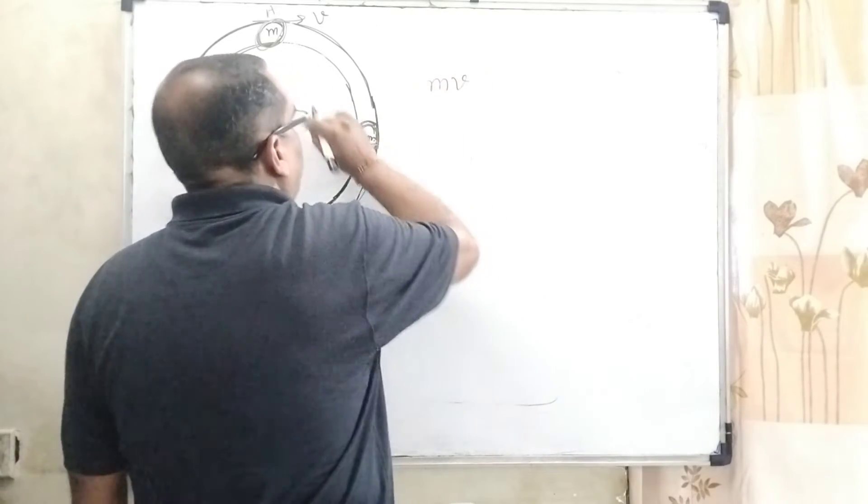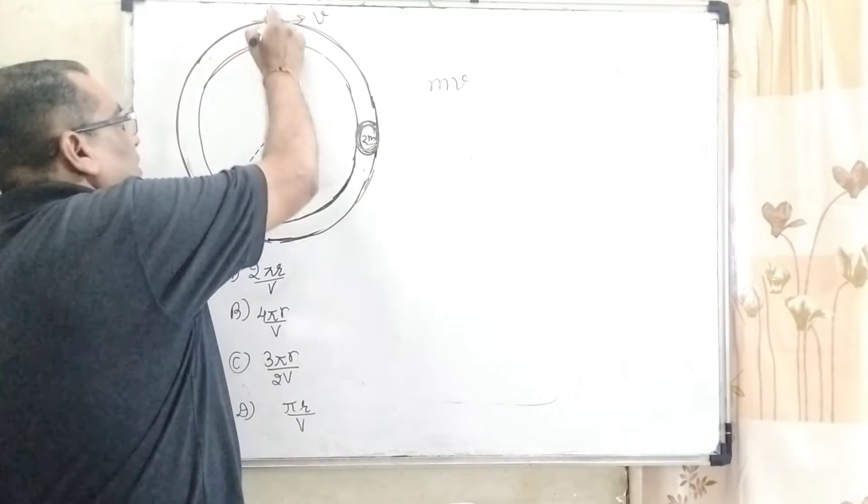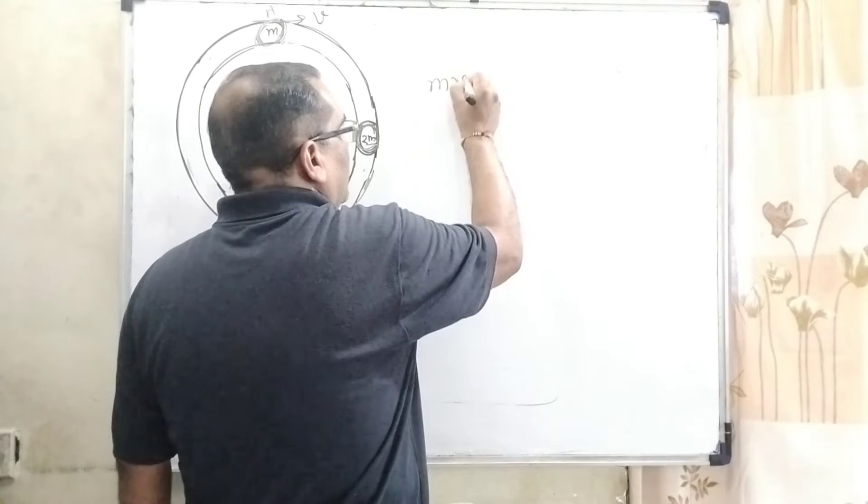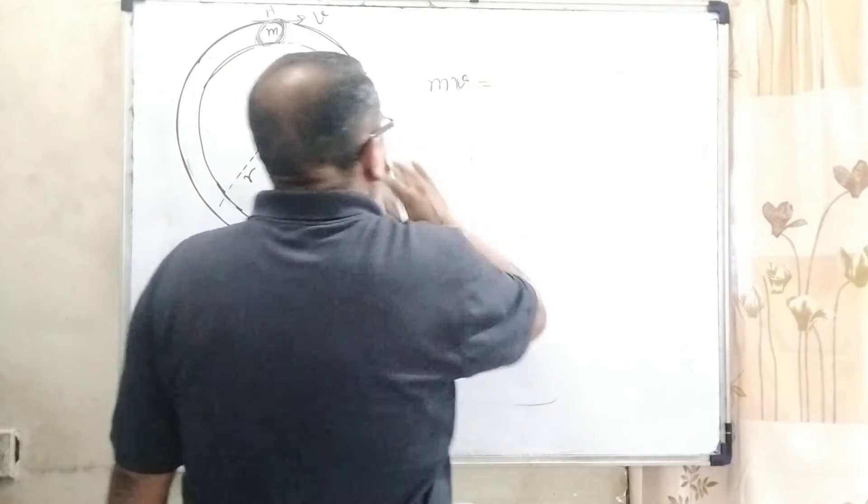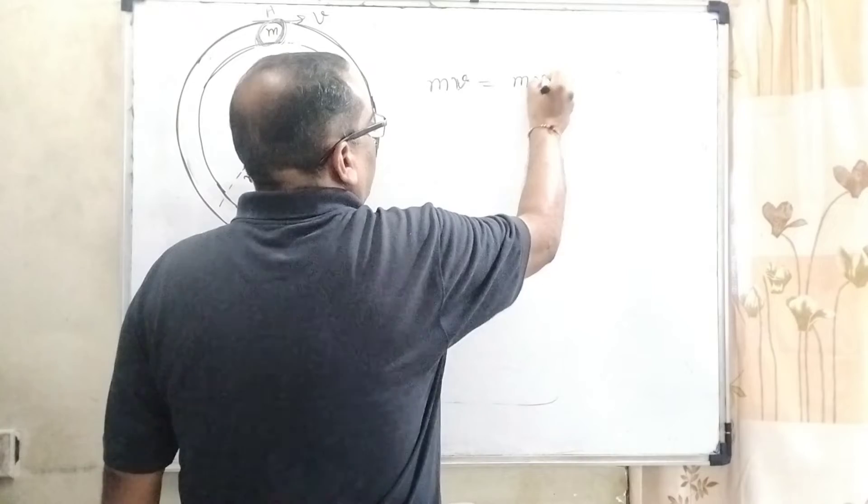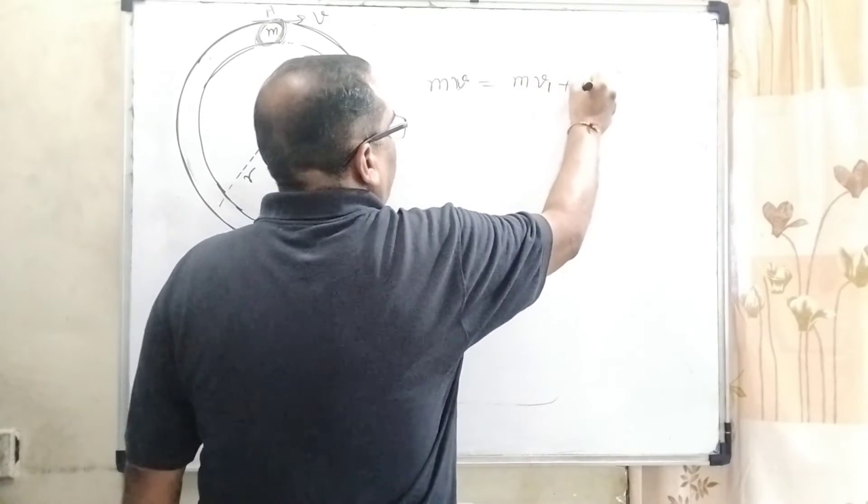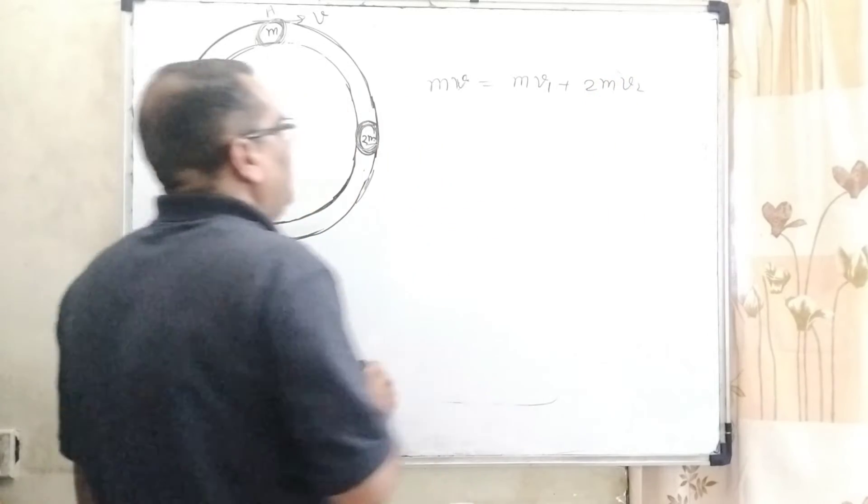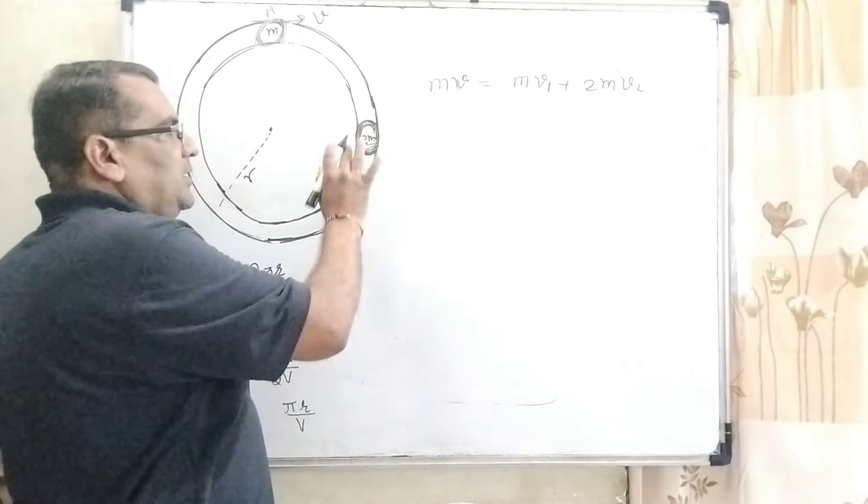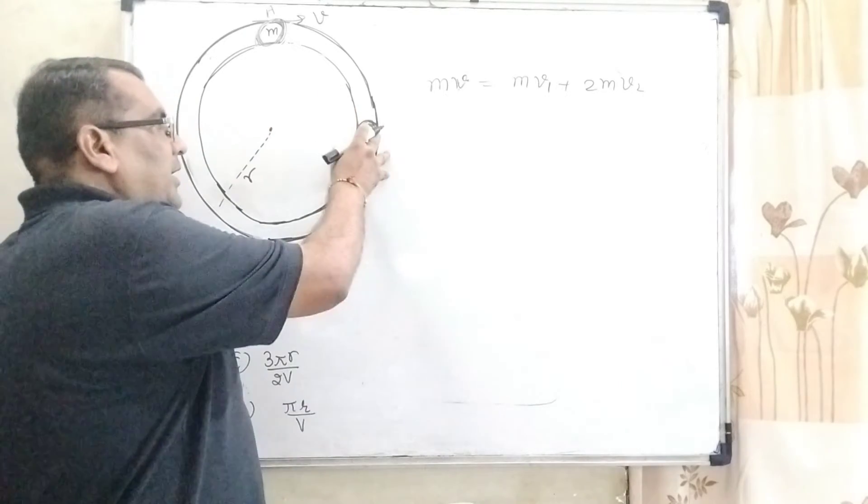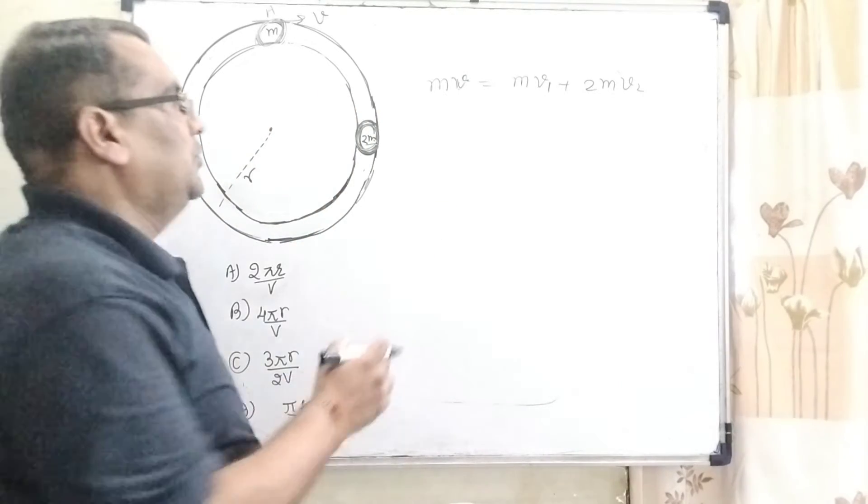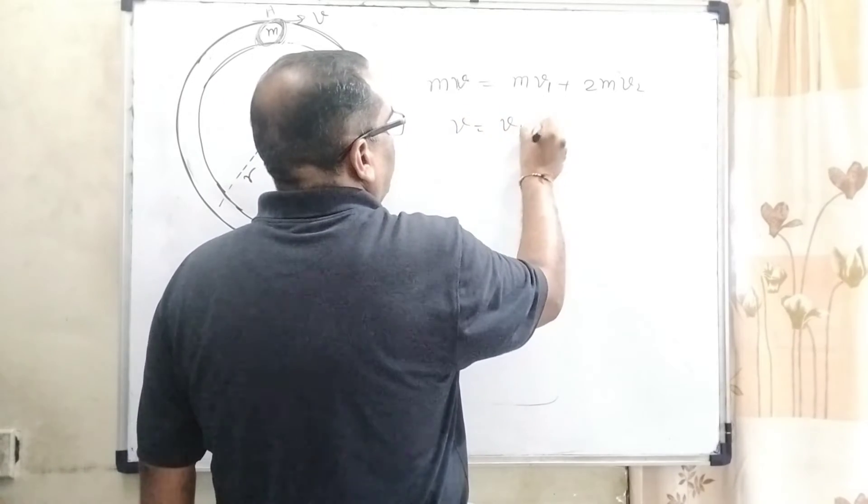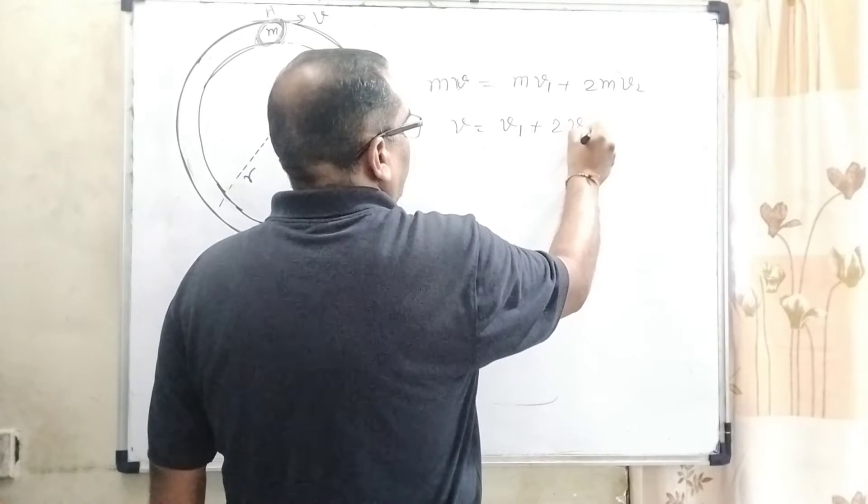First, before collision. Before collision means this object, this spherical object is moving. So therefore it is moving with momentum mv. And after collision its momentum becomes mv1 and 2mv2. Because this spherical object is at rest, but when it collides then it has some velocity. Taking m common and canceling out, then we get v = v1 + 2v2. This is the first equation.